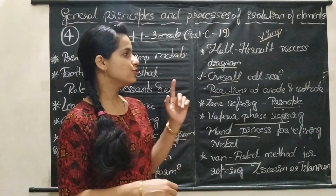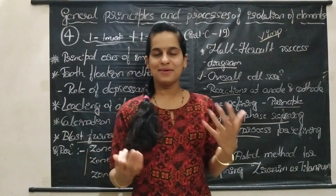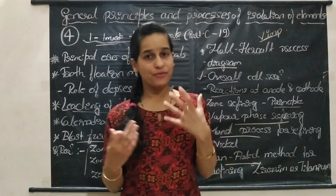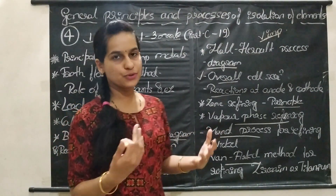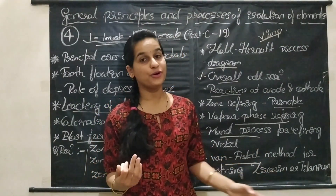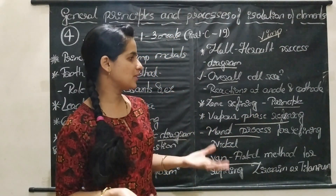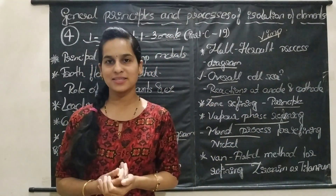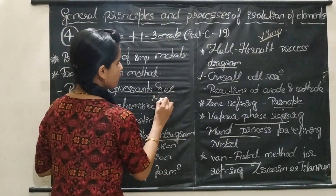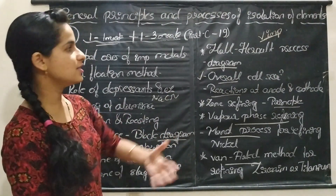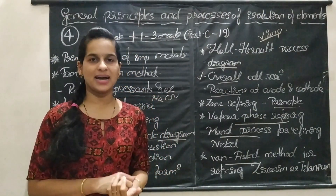For one-mark questions, generally the concentration method or refining method for different metals may be asked — for example, which concentration method is used for sulphide ores, or which method is used for refining of zirconium. Sometimes the principle of zone refining or principles of different methods may be asked, or the role of depressants, or the role of NaCN in froth flotation method, or what is the role of cryolite in the Hall-Héroult process.